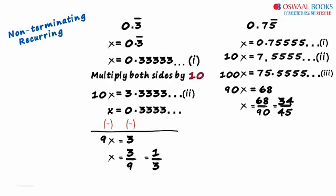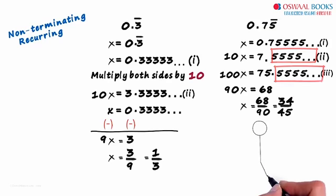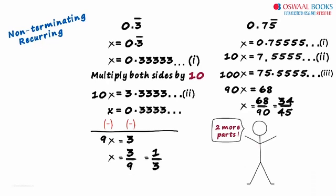It is simple. Just aim to get the recurring part after the decimal and you are done. There are two more parts based on conversion of non-terminating recurring decimals to the form p by q. Make sure you watch them too!